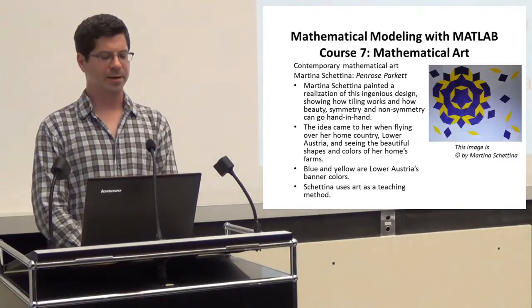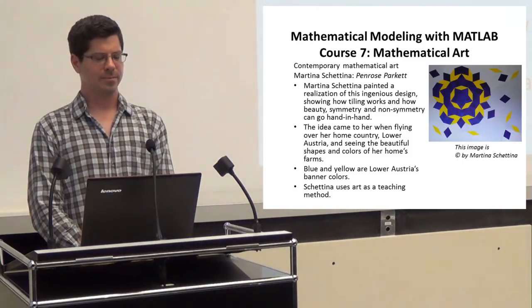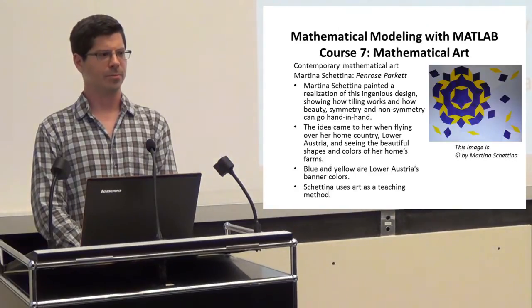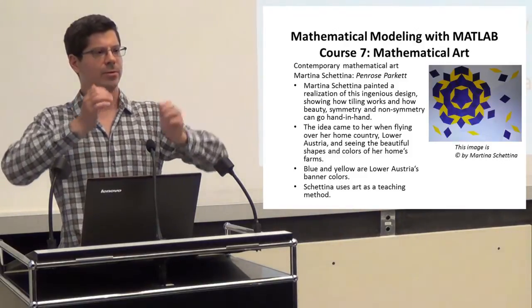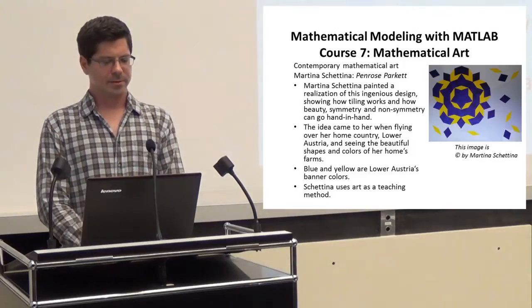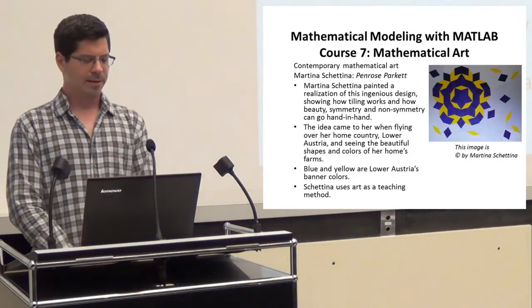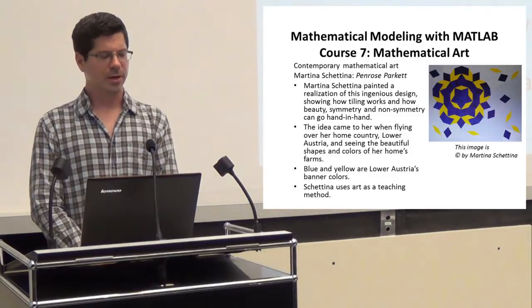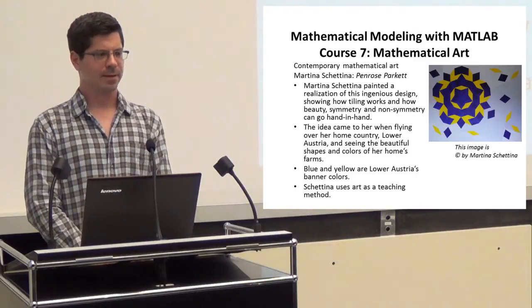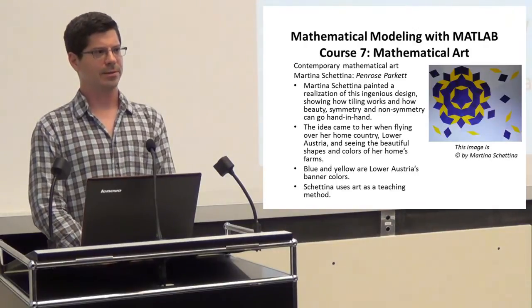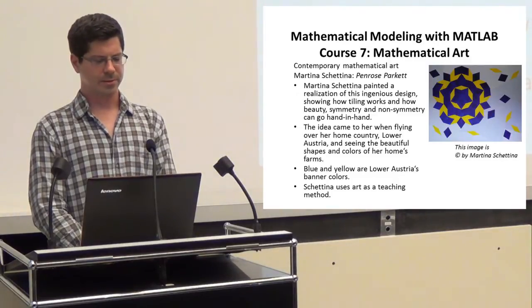And the fun thing is, the idea came to her when she was flying home over her home country, Lower Austria. And when she saw the beautiful shapes and colors of her home's farmlands, of the farms that change in color depending on what is grown there, she thought of this painting and of this interestingly ingenious mathematical structure. By the way, the painting is held in blue and yellow, which are Lower Austria's banner colors. So here you can see that Martina Szeftina uses art as a method of teaching math.